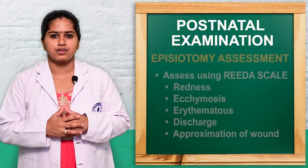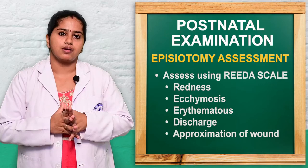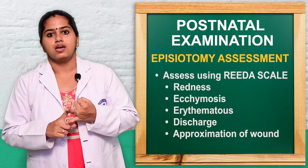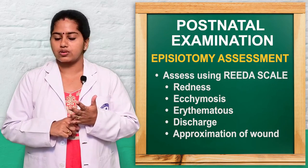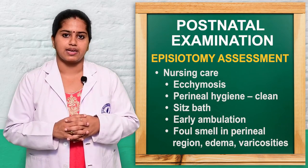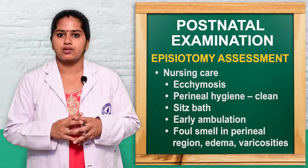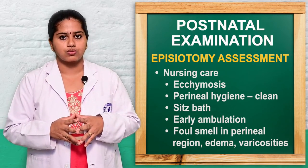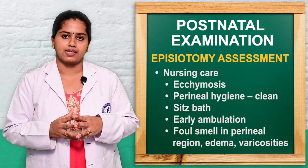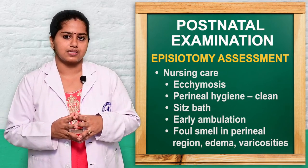Next is episiotomy assessment, which is very important along with perineal assessment. The REEDA scale is used — assessing Redness, Ecchymosis, Edema, Discharge, and Approximation of the wound. We advise the woman to keep the perineal area clean, use sitz baths to promote healing, and encourage early ambulation, which improves circulation and healing of the episiotomy. Perineal edema, foul-smelling discharge, and varicosities can also be identified.